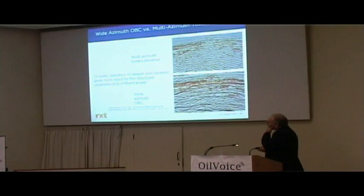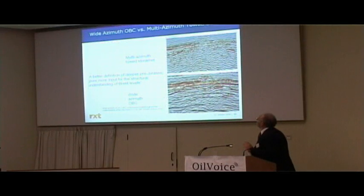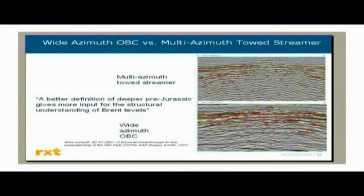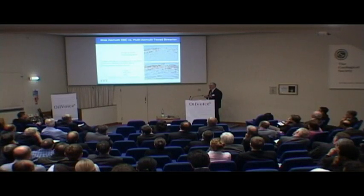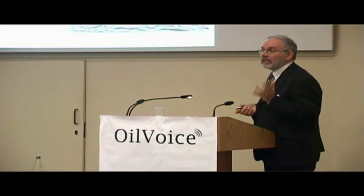This is an example of data comparing wide-azimuth towed streamer and multi-azimuth towed streamer with wide-azimuth OBC that was presented last year at the EAGE. The comment in the text was that the OBC data gave better definition of deeper pre-Jurassic and more equal structural understanding of the print levels. From the seismic data, this is three-pass multi-azimuth compared with the wide-azimuth OBC, and it is much more rich in information — it has better structural definition and better signal-to-noise ratio. We see much clearer resolution of the faulting at the reservoir level with the OBC data than with multi-azimuth towed streamer.